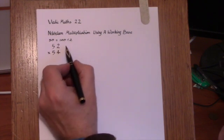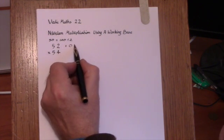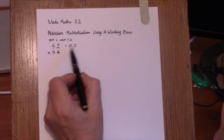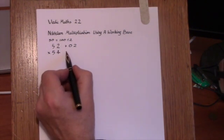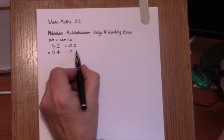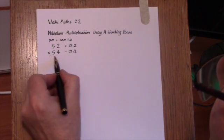We notice that 52 is a surplus of 02, and the number of digits here is equal to the number of zeros in the base, the real base, and here we have a surplus of 4.